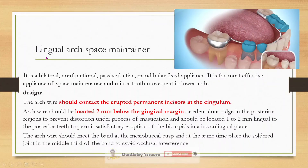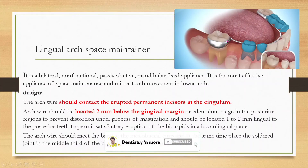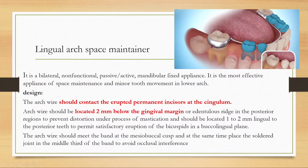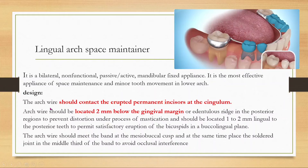For bilateral loss on the lower teeth, the lingual arch space maintainer is used. Abutment bands are placed on both molars, and an arch wire runs from one molar to the other along the lingual side of the remaining teeth. It is a bilateral, non-functional, passive, fixed appliance — the most effective appliance for space maintenance and minor tooth movements in the lower arch.